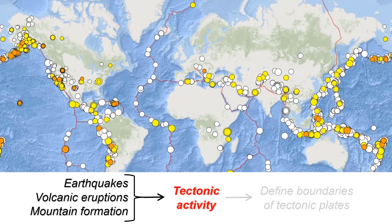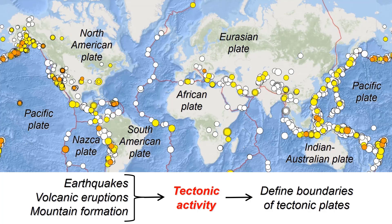Geologists collectively label processes such as earthquakes, volcanic eruptions, and mountain building as examples of tectonic activity, and divide the outer layers of Earth into tectonic plates based on these patterns. The relative motions of these plates cause the earthquakes and volcanoes, and create the features we described earlier. The largest plates are typically named after an associated continent or ocean. By the time you've finished this lesson, you should be able to explain how features such as oceanic ridges and island arcs form, and how the distribution of these features is likely to change in Earth's future.